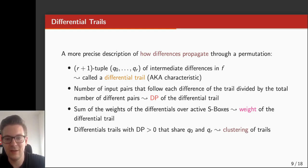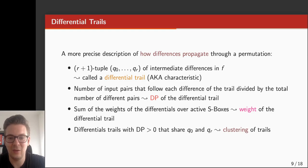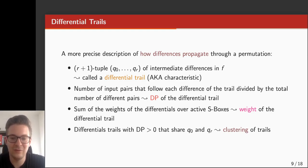Similar to the differential case, a dp is assigned to a differential trail — this is the number of input pairs that follow each difference of the trail, relative to the total number of pairs. We define the weight of the differential trail as the sum of the weights of the round differentials, which equals the weights of the differentials over the active S-boxes. Each trail partitions the set of pairs that follow the differential. If there are multiple trails sharing the same input and output difference, we say these trails cluster within the differential.